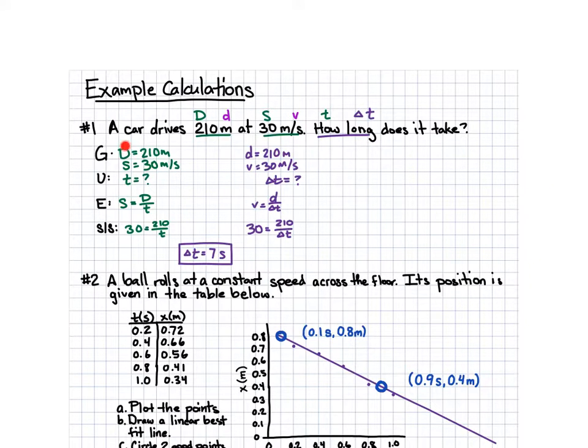Givens. D equals 210 meters. Now, when you write this, I want you to write the name of the variable, D, write the equal sign, and also write the number with the units. Make sure you do all those. When I grade it, I'm going to be looking for all four of those things. S equals 30 meters per second. Unknown is time. T equals question mark. What equation do you have that has S, D, and T in it? Speed equals distance over time.